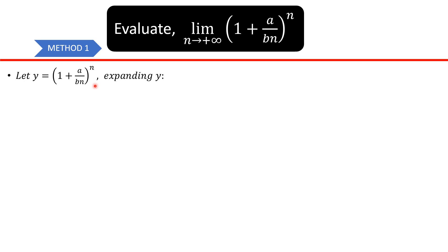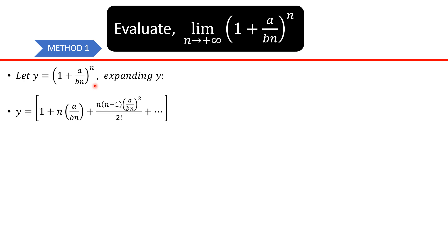Continuing the expansion: plus n times (n minus 1) times a raised to the power n minus 2 times b squared, all over 2 factorial. So we're basically using that expansion formula and substituting what a and b are in this case.